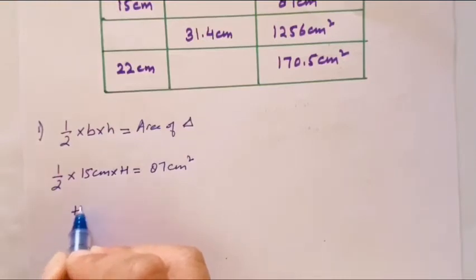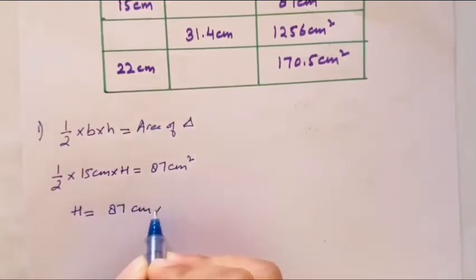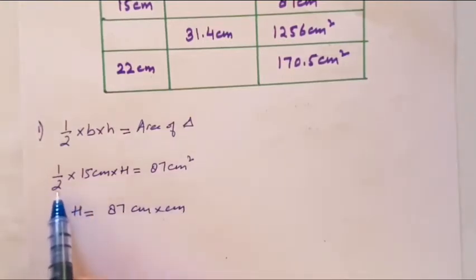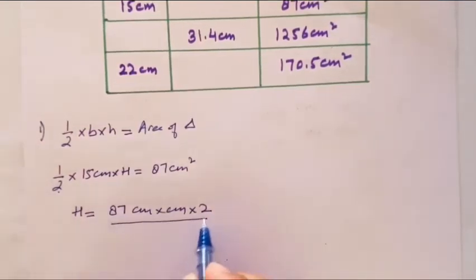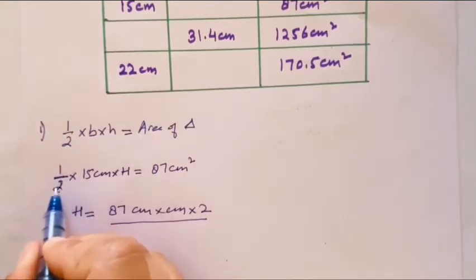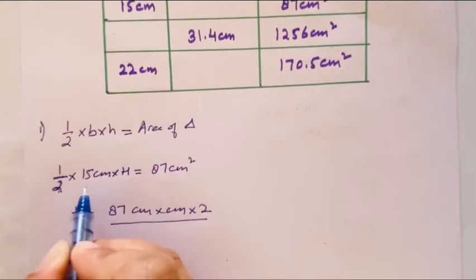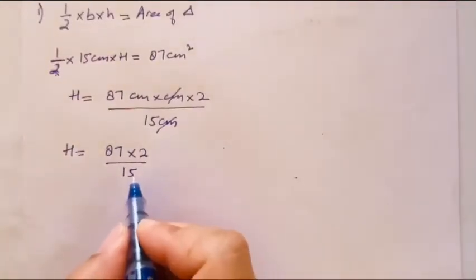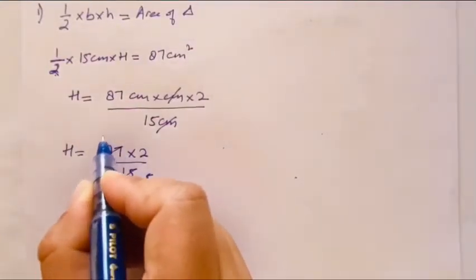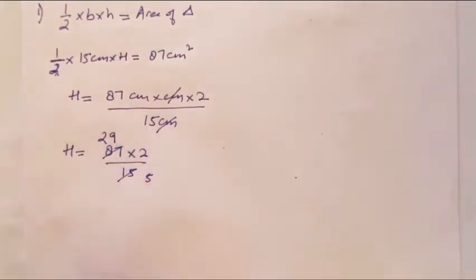Now if we have to find height, this will be 87 centimeter into centimeter. Now if you see, 2 is divided by this way so this way it will be multiplied. 15 is multiplied by this way, so it will be divided. Centimeter cancels. H equals to 87 into 2 upon 15. Now cancel: 3, 3, 3 to 6, 7, 8 to 3, 9 to 27. So H equals to 29 into 2 upon 5.